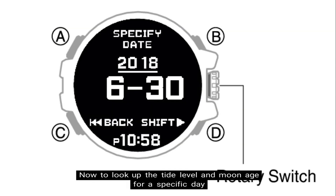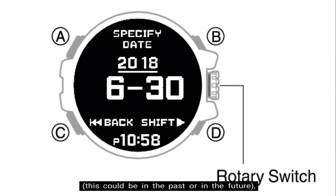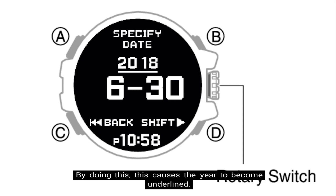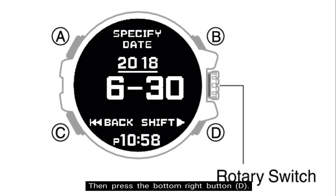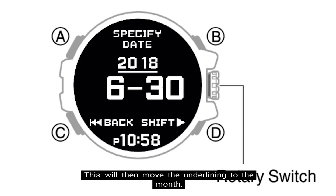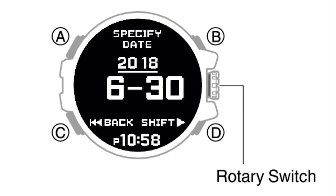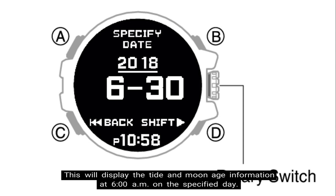To look up the tide level and moon age for a specific day — either in the past or in the future — follow these steps. Step one: hold down the bottom right button for about one second, which causes the year to become underlined. Step two: rotate the rotary switch to change the year setting, then press the bottom right button to move the underlining to the month. Step three: rotate the rotary switch to change the month setting, then press the bottom right button to move the underlining to the day. Step four: rotate the rotary switch to change the day setting, then press the rotary switch. This will display the tide and moon age information at 6 a.m. on the specified day.